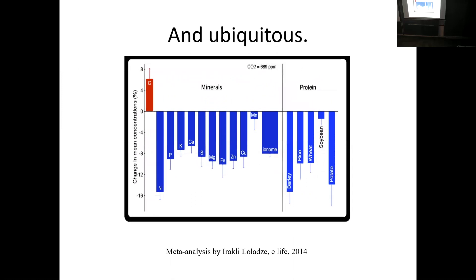This is some meta-analysis by my colleague looking at the carbon-to-nitrogen ratio. Plants are very adaptable — if you change the atmosphere to be carbon-rich, plants are going to have more carbon and it's not going to be able to keep up with nitrogen. There's a dilution effect and a metabolic switch going on in terms of nutrient composition.